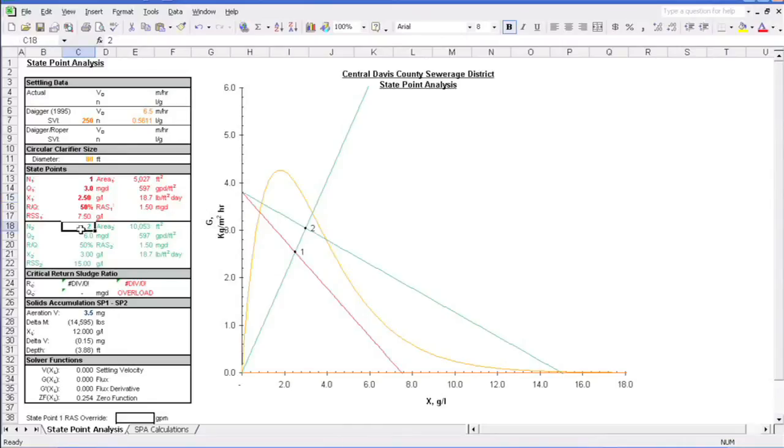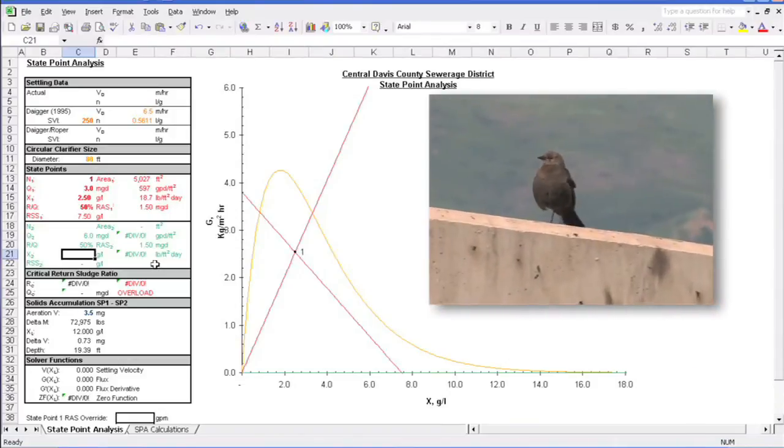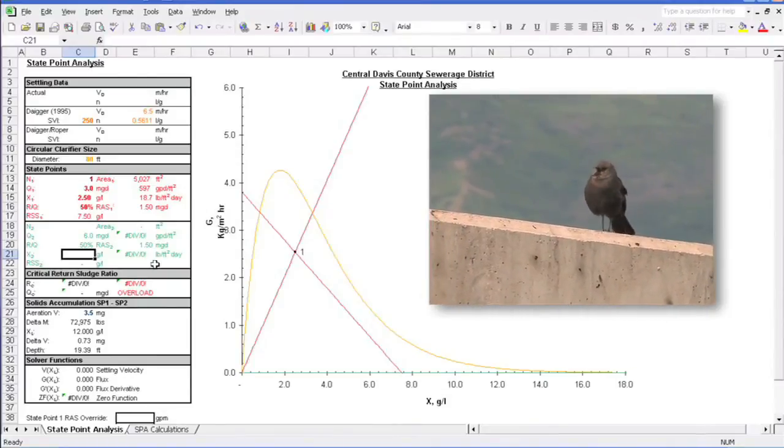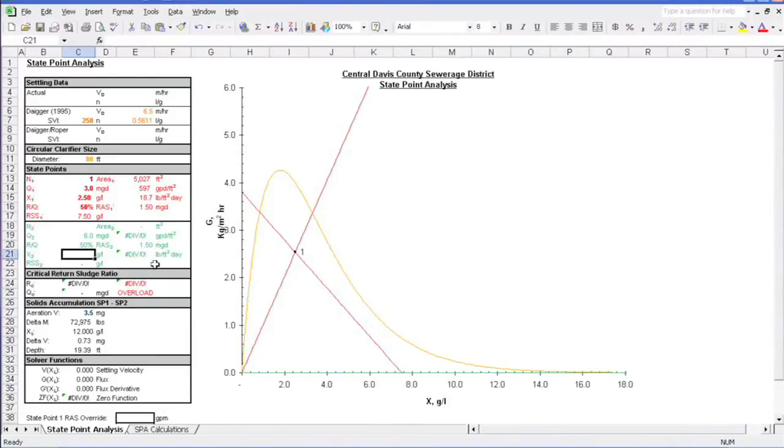Let's clear the second state point values now so we can focus on our single state point. And as you've probably noticed, this model adjusts the graph automatically and immediately, allowing us to quickly evaluate how things are going. Well, we see that in this case, things are going quite well. Both the state point and the underflow line fall under the settling curve. Man, life is good. The sun is shining, birds are chirping, and the air smells fresh. Well, as fresh as a wastewater plant has to offer. But just like any rainstorm can ruin a perfect day, it can also ruin your smoothly operating clarifier.